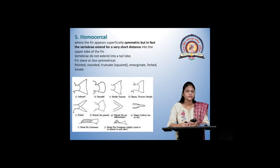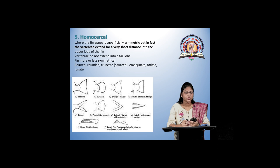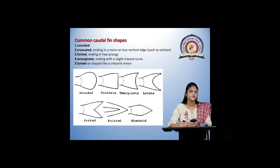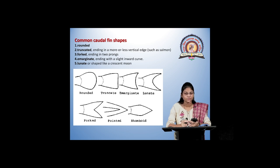Next is the homocercal. In the homocercal tail, both lobes are equal and show symmetry, but the vertebrae extend only a very short distance. It shows variation like pointed, rounded, truncated, emarginated, forked, lunate, etc. Some common types of homocercal caudal fins: rounded, truncated with vertical edges, forked with two prongs, emarginated with an inward curve, and lunate with a crescent moon-like shape.